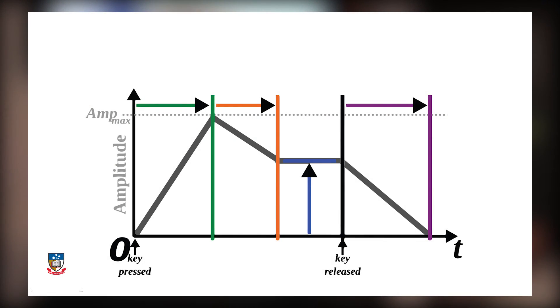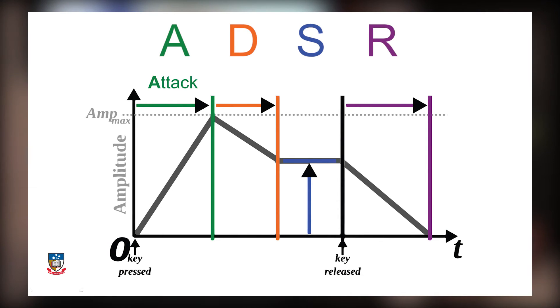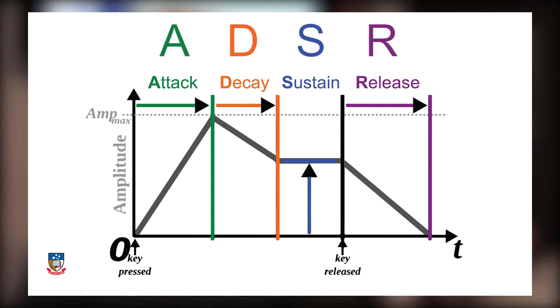The output phase of a synthesizer uses envelope generators to shape the sound over time. These normally have a graphical shape associated with them marked ADSR. Attack defines how fast the sound comes in. Decay allows the sound to fade down to a sustained tone. Sustain is the sustained level, and Release is the length of time the sound takes to decay away after you release the key.